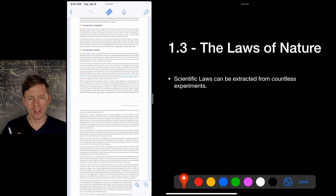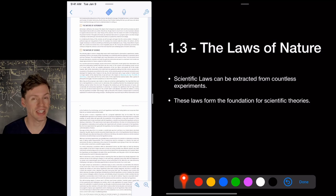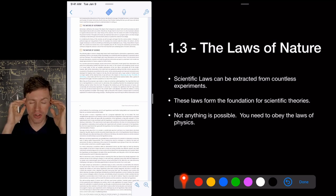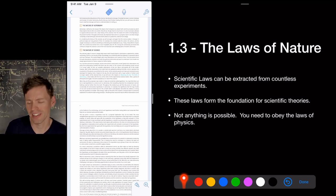All right. So the laws of nature. We can extract scientific laws from countless experiments. These laws form the foundation of scientific theories. They're the bedrock that allow us to build our infrastructure, our scientific infrastructure. The short story is that not anything is possible. You need to obey the laws of physics. You can't just dream anything and do that. Okay. You can dream anything that can be done and you can do anything that's possible. So don't let naysayers prevent you from starting a company or going and being successful or something. But the better you understand the laws of physics and the laws of nature and economics and science and sociology, the more power you have.